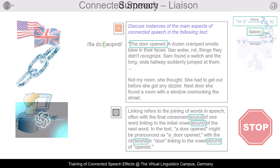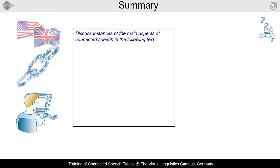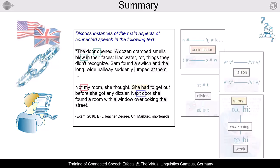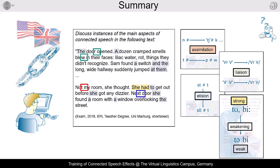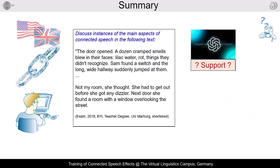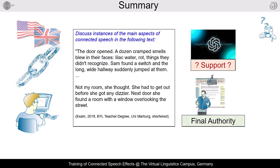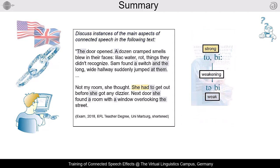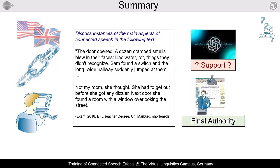To summarize, there is no need to change classical training methods to master connected speech effects. You need text material and have to find potential candidates of assimilation, elision, and so on. Large language models are of little help — their analysis results are by and large unacceptable and may confuse the learner rather than support them. You need well-trained linguists for the mastery of this topic. By the way, did you notice that ChatGPT did not even mention weakening effects? So you'd better not trust the AI text generator. Thanks for listening and watching.